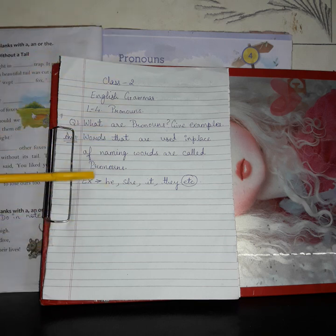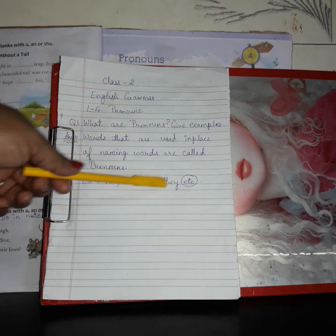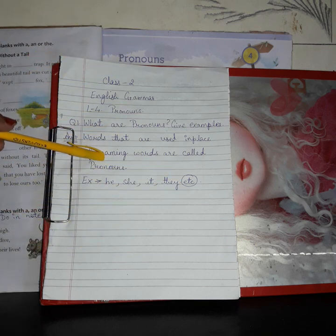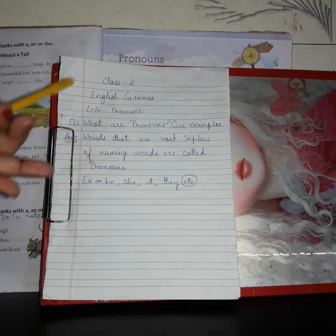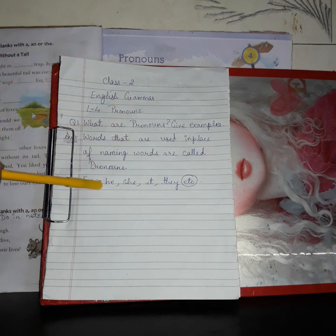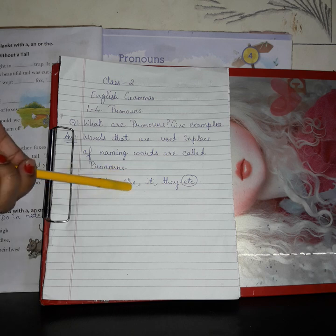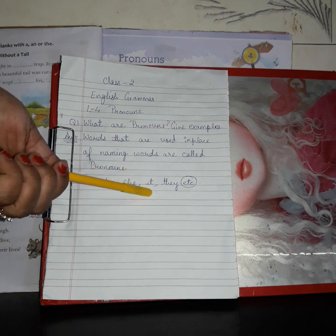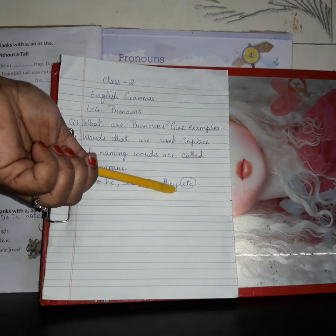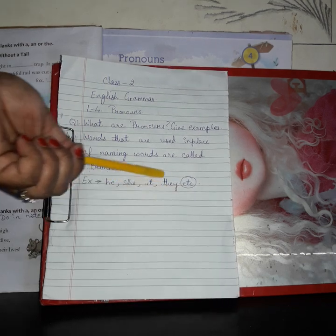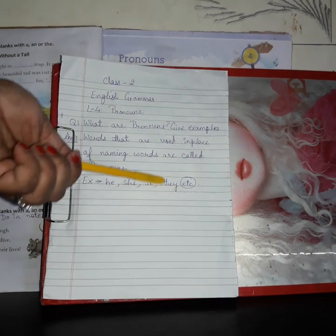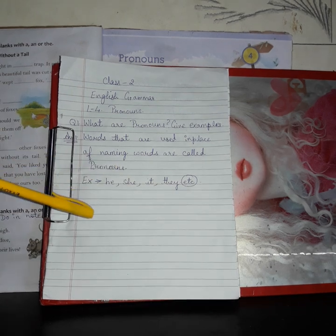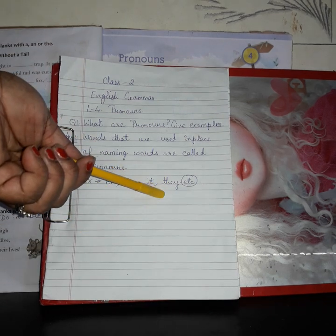The words used like he, she, it, they — used replacing person, place, animal, or thing. For a boy we use 'he'. For a girl we use 'she'. For things, animals, and birds we use 'it'. For more than one person or many people we use 'they'. For many animals and birds we also use 'they'.